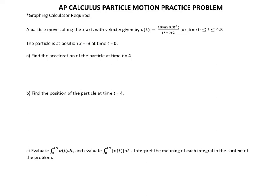The particle is at position x = -3 at time t = 0. This is pretty important for us to pay attention to because this is telling us that we have an initial value. For part A, it says find the acceleration of the particle at time t = 4.